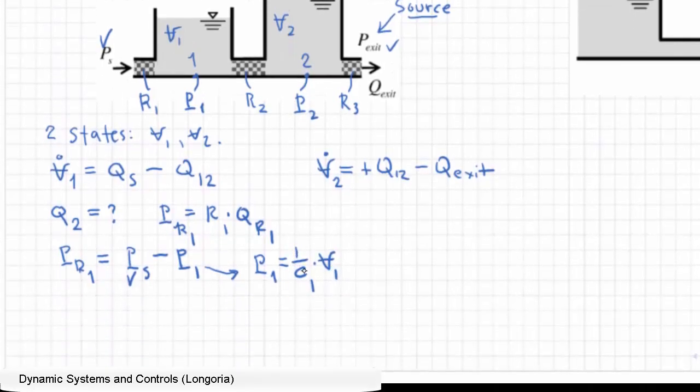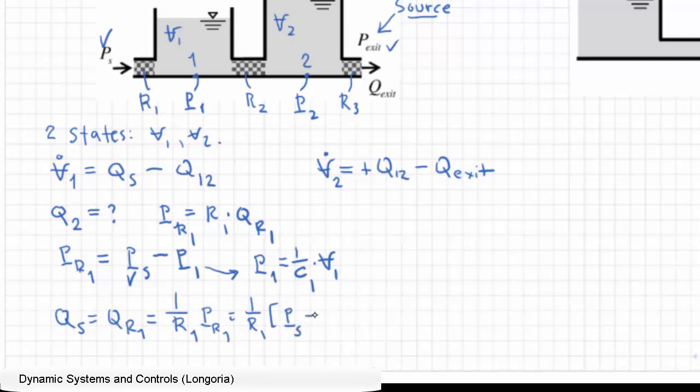So what that allows you to find is, at the end of the day, that Q_S—which as I said I should have called it Q_R1—is equal to 1 over R1 times P_R1, or 1 over R1 times the difference P_S, which is known, minus 1 over C1 times V1. So I've determined one of those terms in terms of input and a state.